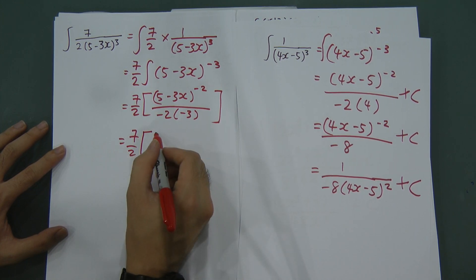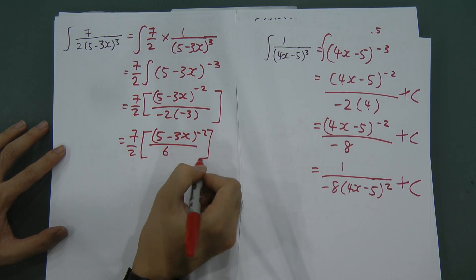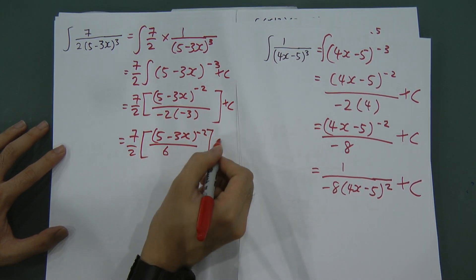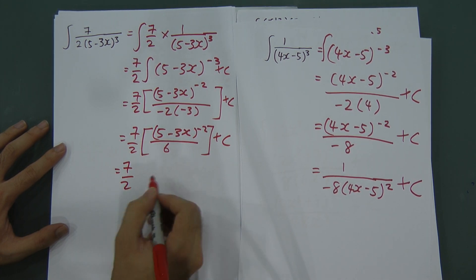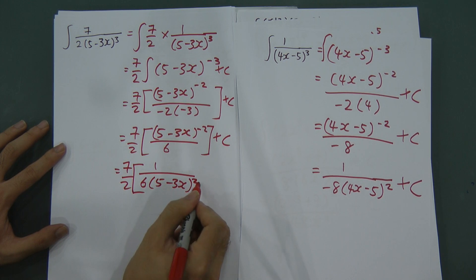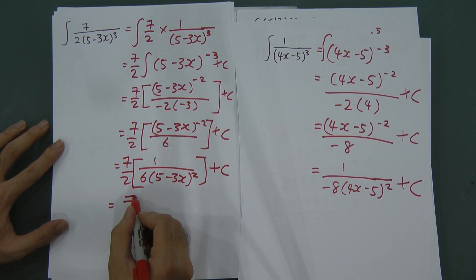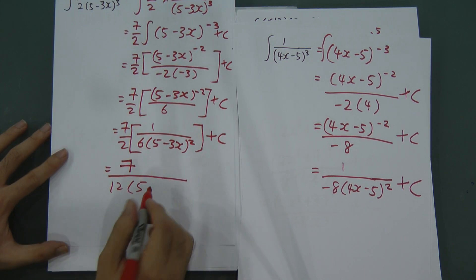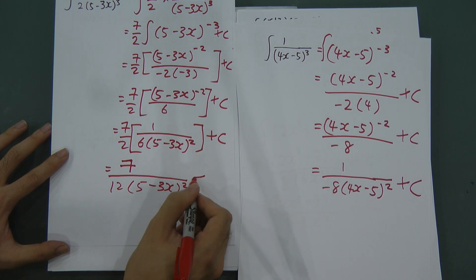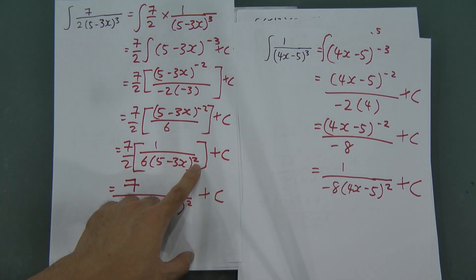Remember to add C. After rearranging the negative power, you get negative 7/2 multiplied by 1 over 6(5 - 3x)². Multiplying through: 2 multiplied by 6 gives 12, so the answer is 7 over 12(5 - 3x)² plus C.